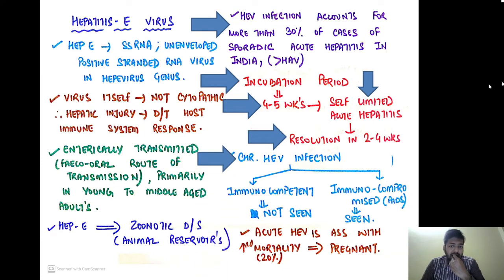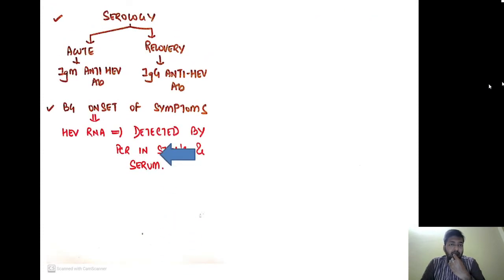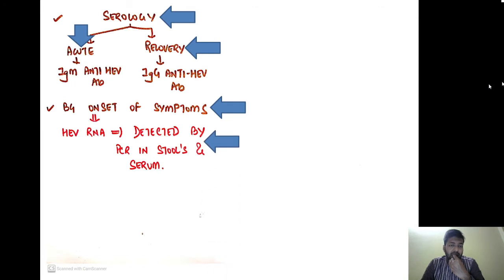Chronic hepatitis E virus infection is not seen in immunocompetent individuals. However, in immunocompromised individuals — such as transplant recipients, patients on immunosuppression, or AIDS patients — chronic HEV infection can occur. Acute hepatitis E virus is associated with an increased mortality of approximately 20% in pregnant women. For serology, in the acute phase you will have IgM anti-HEV antibody, and during recovery IgG anti-HEV antibody. Before the onset of symptoms, HEV RNA is detected by PCR in stool as well as in serum.